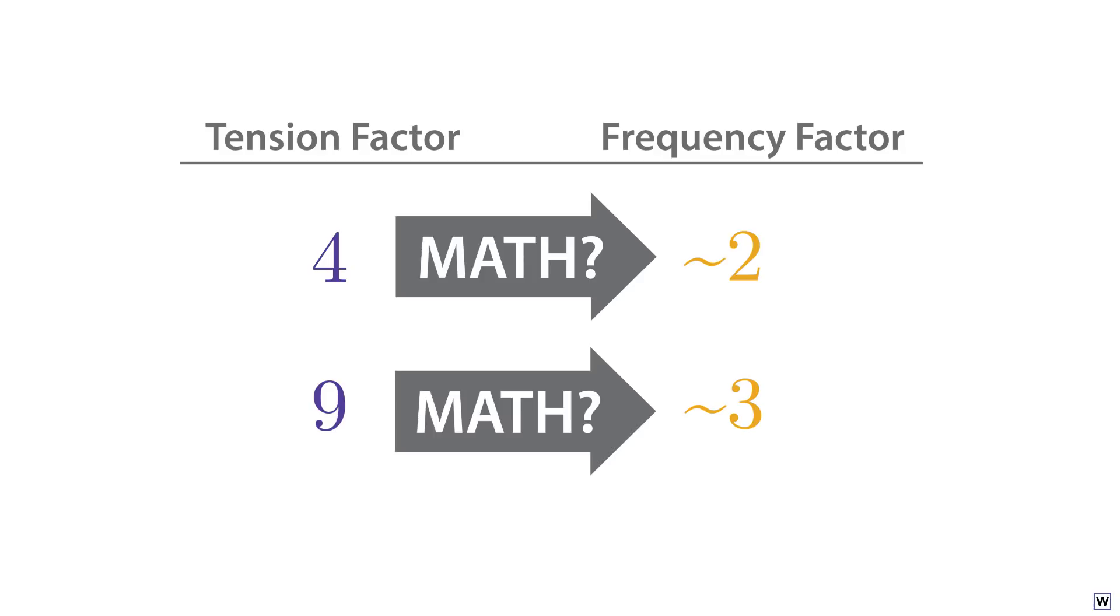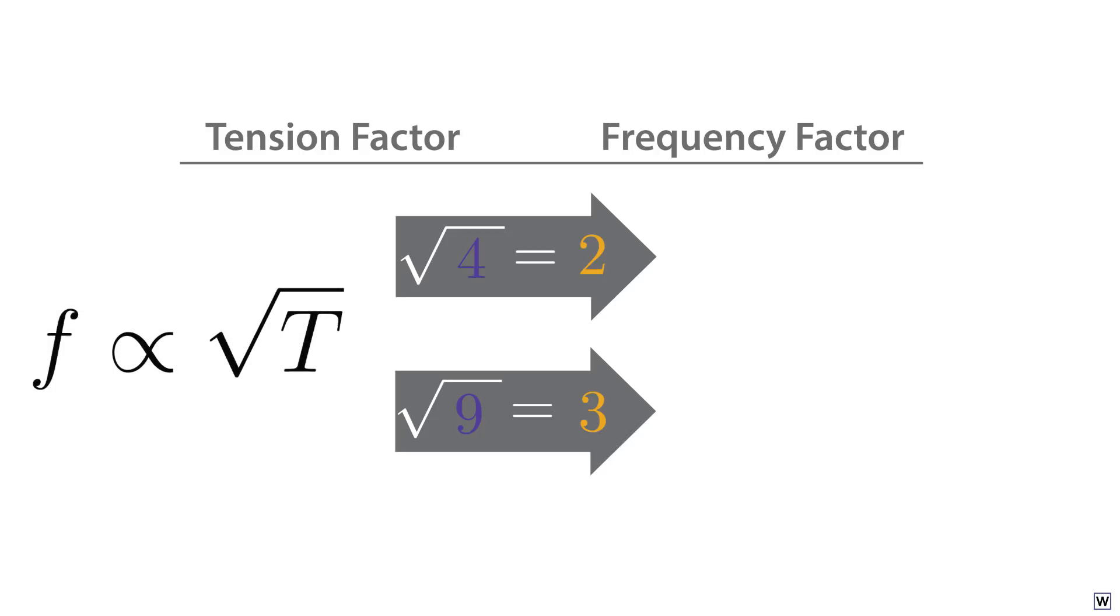The piece of mathematics we're looking for here is the square root. So, based on this evidence, our hypothesis, our educated guess, is that the frequency of a vibrating string is proportional to the square root of its tension.